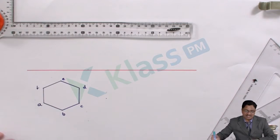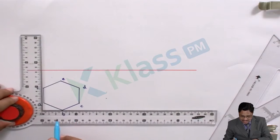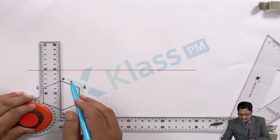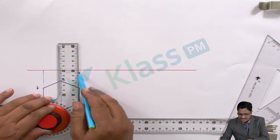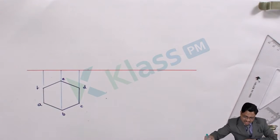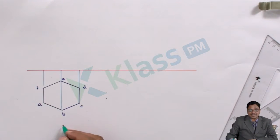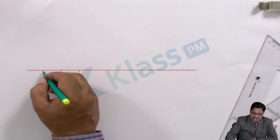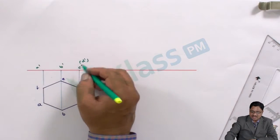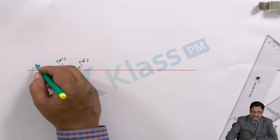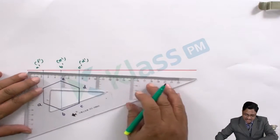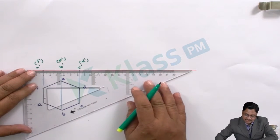Once the hexagon is completed, transfer all the points to get the other view, since front to top will be on the same line. With the help of the mini-drafter, transfer from every corner of reference. Points A, B, C are nearer to us and are visible. Points D, E, F are behind and should be mentioned in brackets. Now connect A to C to get the respective front view. This represents the primary position.